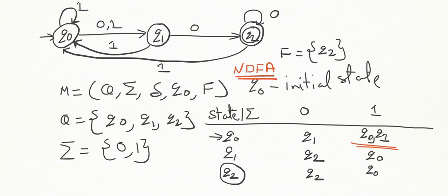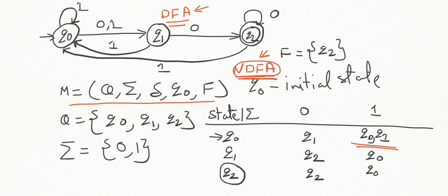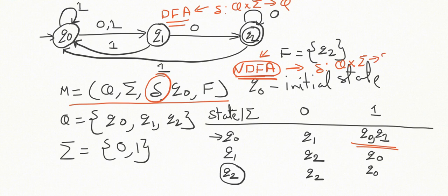So now we have an idea about DFA and NDFA. Uniqueness is present in case of DFA while uniqueness is missing in case of NDFA. The representation uses the same five tuples, except for the transition function δ. In case of DFA, δ maps Q × Σ into Q, while in case of NFA, δ maps Q × Σ into the power set of Q. Thank you.